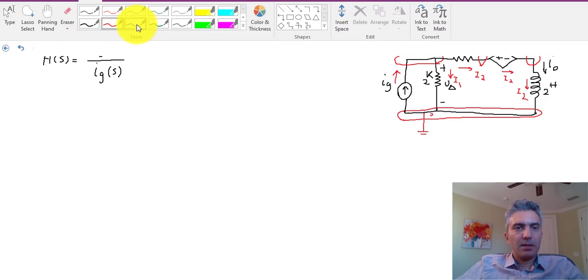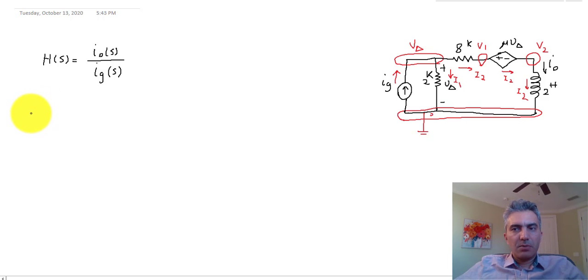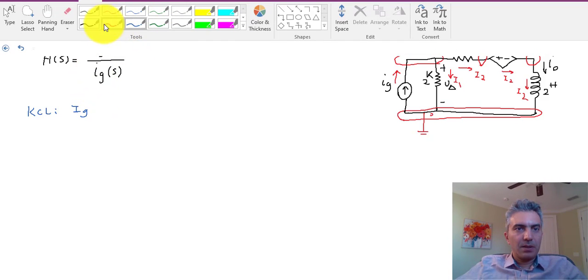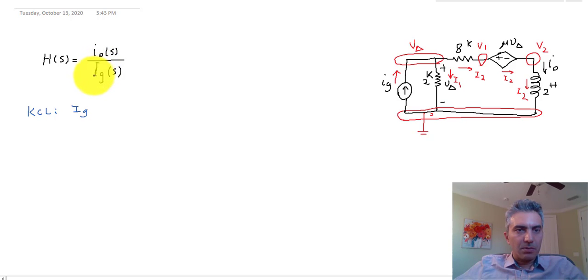Once we are done with labeling the circuit, we're going to start writing equations. KCL and equations for components. There's only one KCL that we need to write for this circuit. That would be I_G, and I'm using capital here to basically differentiate I_G in the time domain from I_G in the s domain. I should have done that in the definition of the transfer function as well, so I'm going to do that: I_G and I_out.